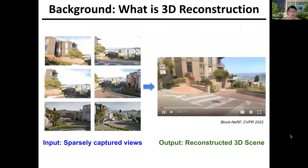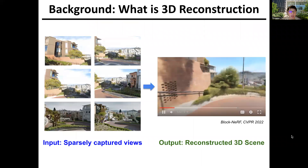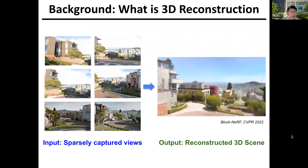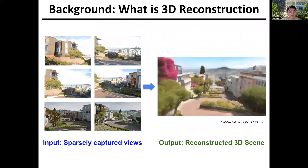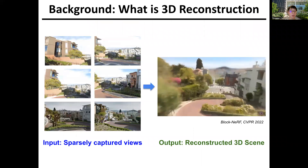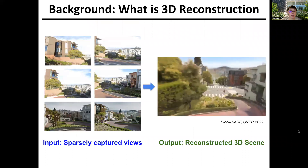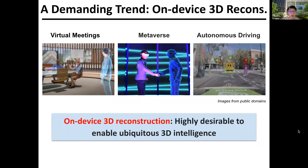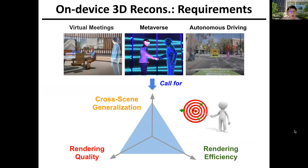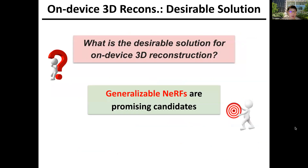Our work targets 3D reconstruction, which aims to reconstruct a 3D scene given a set of sparsely captured view images. Driven by the emerging 3D reconstruction techniques, on-device 3D reconstruction is highly desirable in numerous applications to enable ubiquitous 3D intelligence in our daily life. This demanding need requires 3D reconstruction techniques to simultaneously achieve high rendering quality, high rendering efficiency, and the capability of cross-scene generalization. The research question is: what is the desirable technical solution for on-device 3D reconstruction?